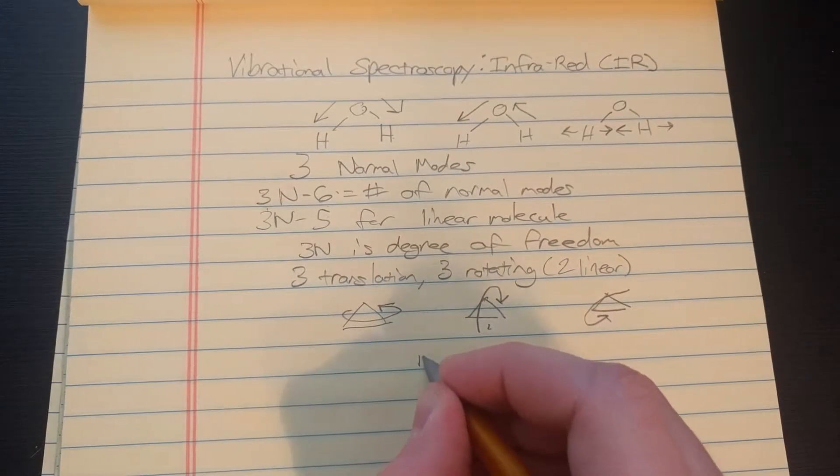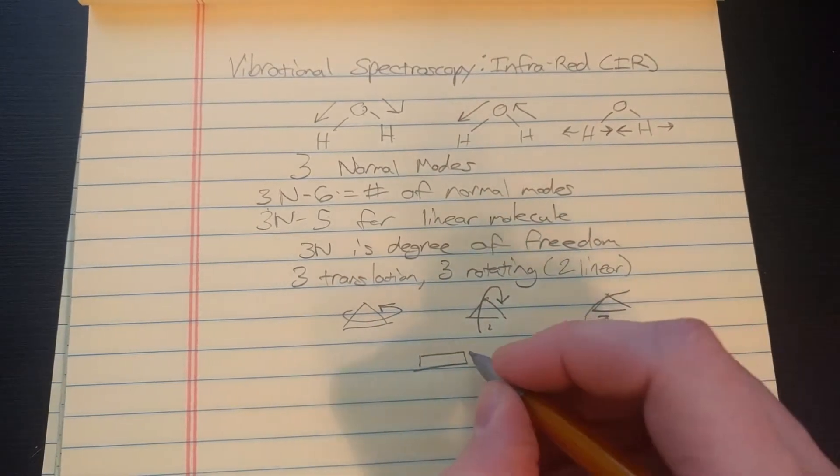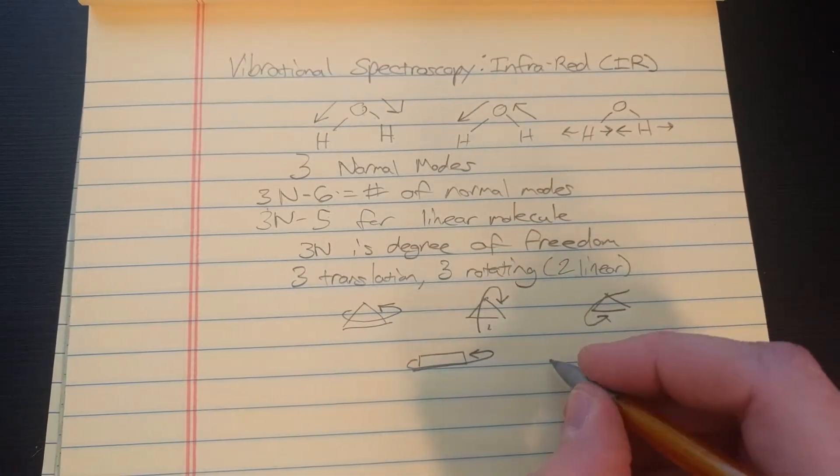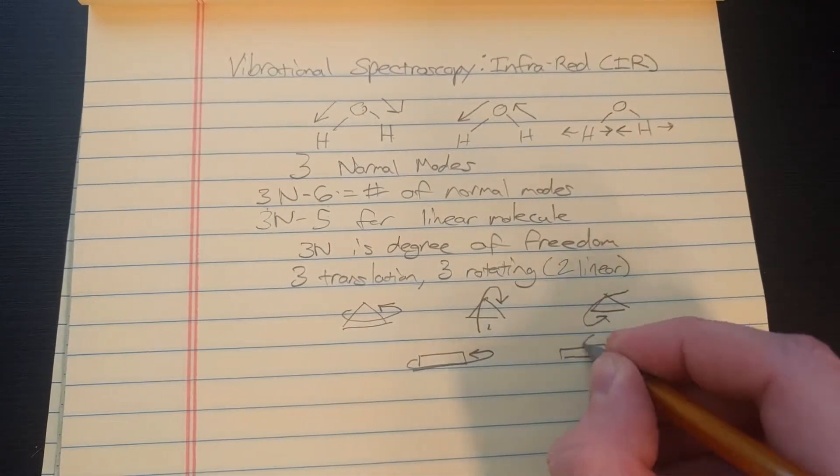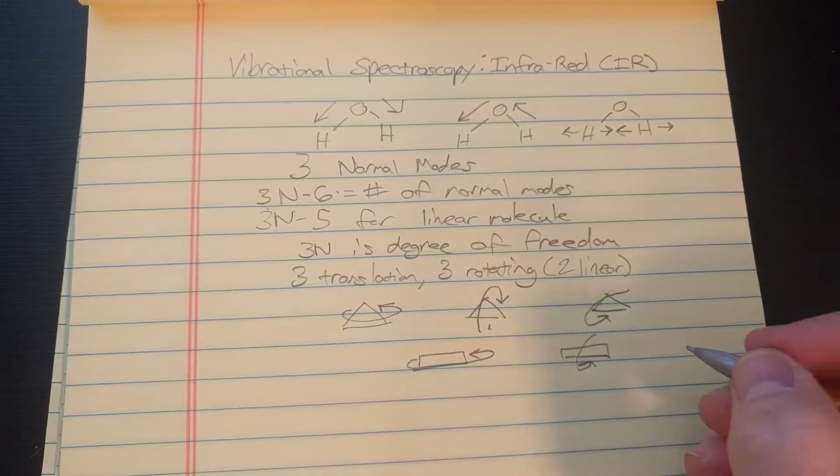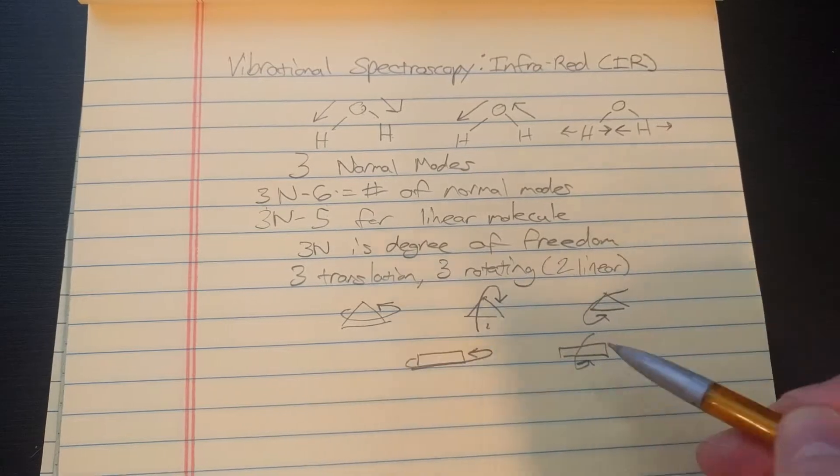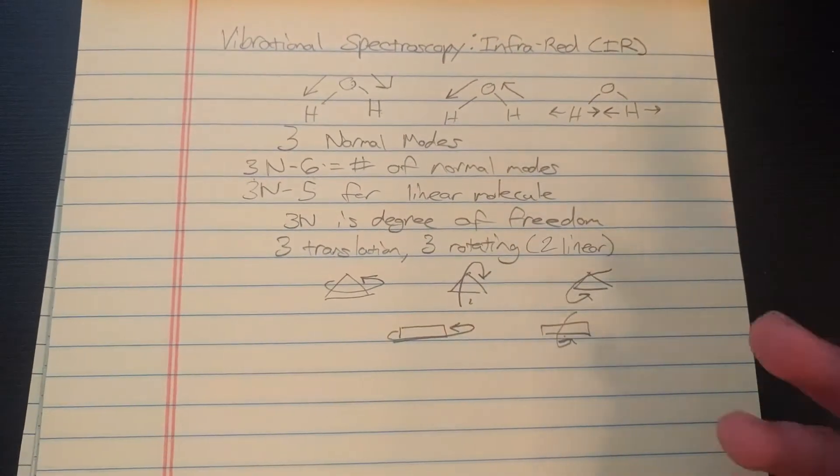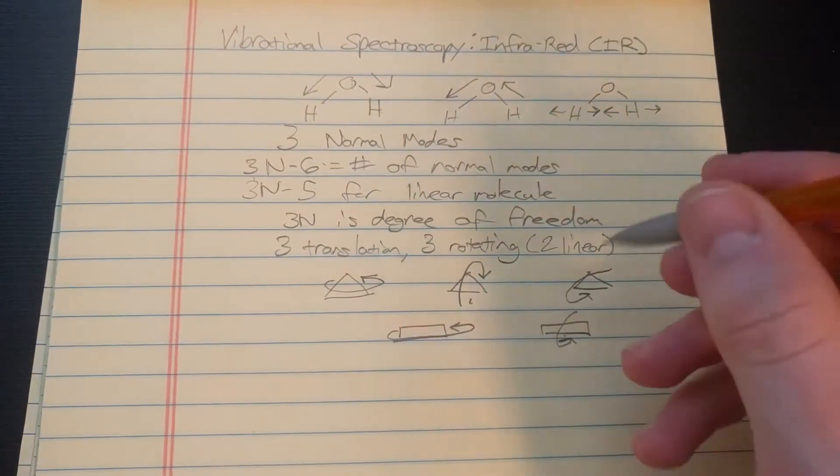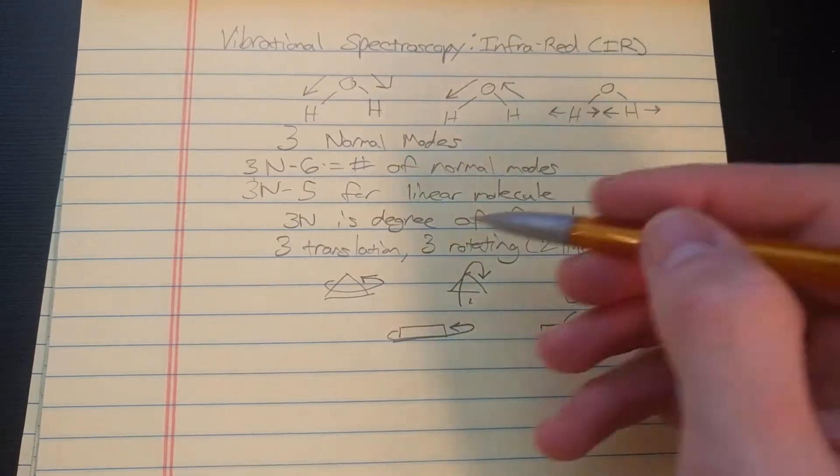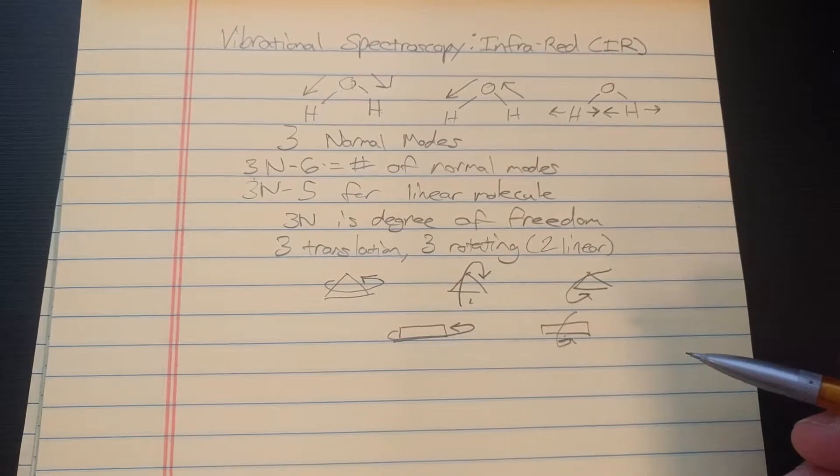But only two for linear. So for linear, let's take a rectangle. Now it can flip over long ways, or it can flip over short ways. But flipping over diagonally is just a combination of this way and this way. And then finally, the rest of the degrees of freedom are vibrational degrees of freedom.